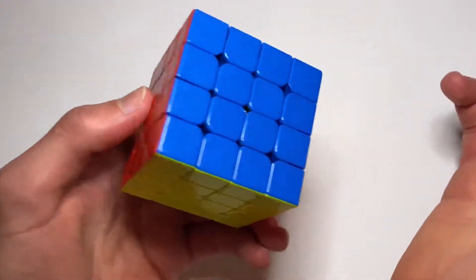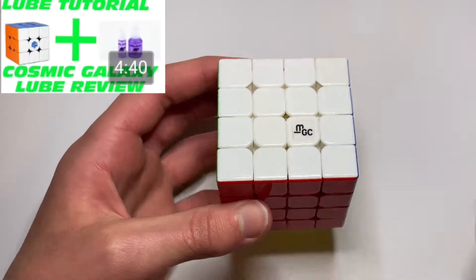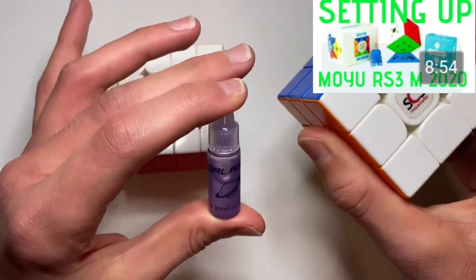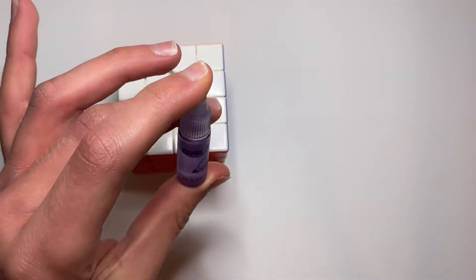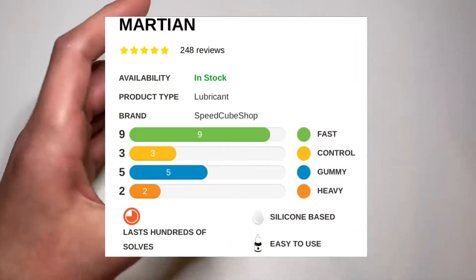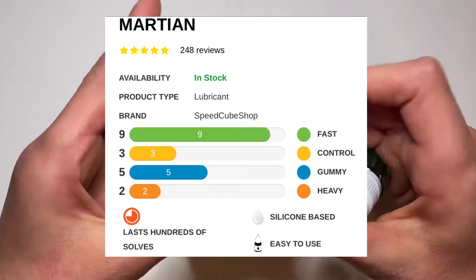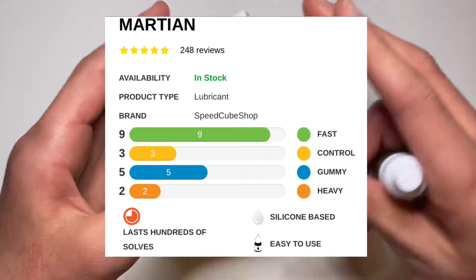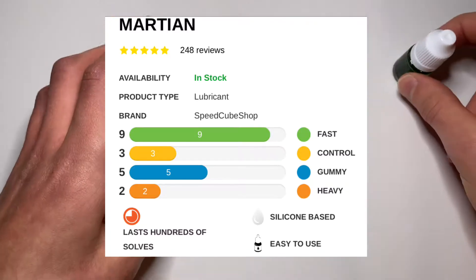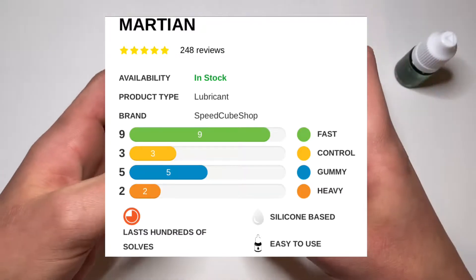A little while back I lubed my Gana RS-M with the Galaxy lube and I also lubed my Moyu RS-3M with the Galaxy lube and customized it. But I'm going to try the Martian lube today because as you can see on the screen, the Martian lube has more speed but it still is a bit gummy and I like the gummy feel. So I'm going to use the Martian lube today for this video and see how it turns out in the MGC 4x4 because it pretty much matches the MGC characteristics that I want for this cube.